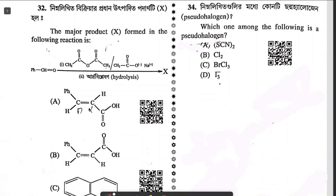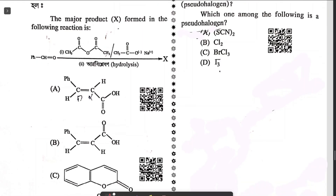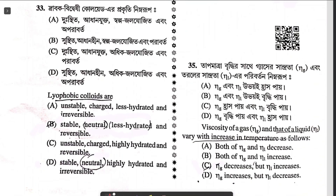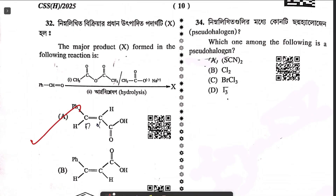Question thirty-two: the major product formed — this is a Perkin reaction leading to cinnamic acid. Since option B is the cis isomer, the only possible answer is trans-cinnamic acid, option A. Question thirty-three on lyophobic colloids: these are unstable, all colloids are charged particles, they are thermodynamically less stable and irreversible — option A. Question thirty-four: which of the following is a pseudohalogen — answer 34A.